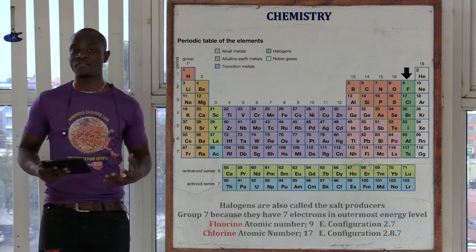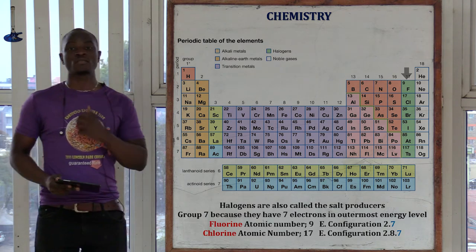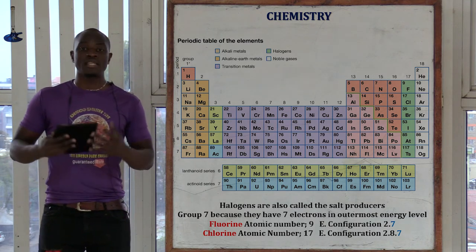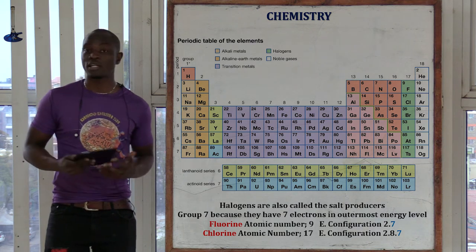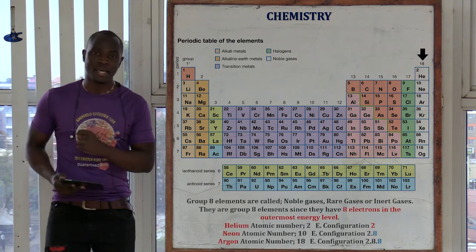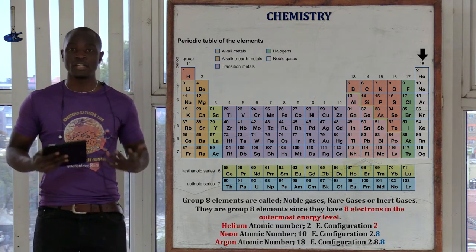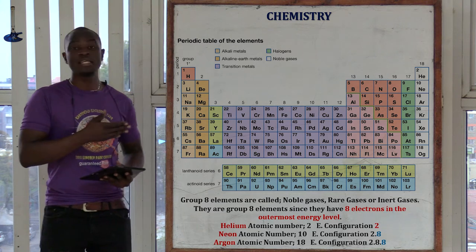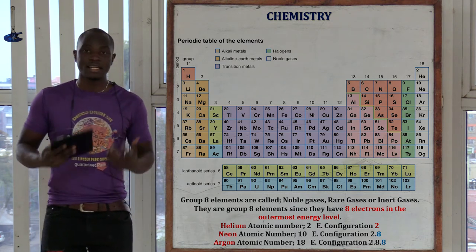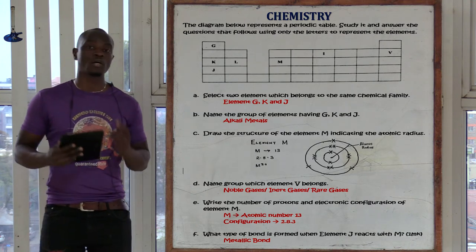Group seven is referred to as the halogens or the salt producers. It comprises fluorine, chlorine, bromine, iodine, etc. You can call it either of those two names and it is correct. Then we have the last group, group eight, which mainly comprises the noble gases — helium, neon, etc. That chemical family is referred to as the noble gases, but you can also call it inert gases or rare gases. All three names are correct for group eight or group 18.